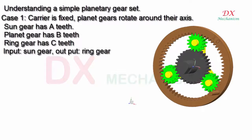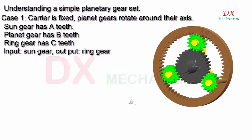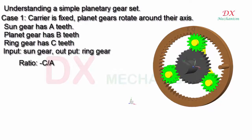Input: sun gear. Output: ring gear. The formula of ratio equals C over A.